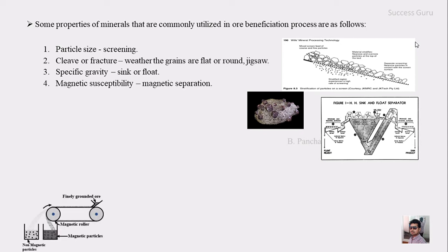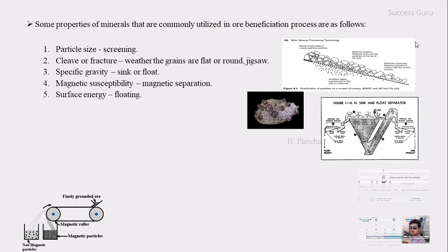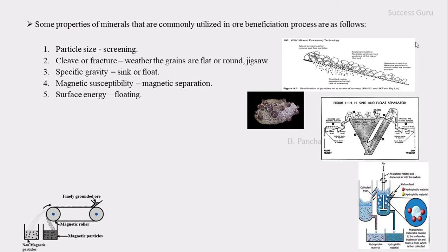The fourth property is magnetic susceptibility — separation with the help of magnetic properties. There is an image below showing a fine powder passed over a conveyor belt with a magnetic head roller. The roller attracts the magnetic material towards the conveyor belt, while the non-magnetic mineral is shifted out and thrown onto the non-magnetic portion. This is how magnetic separation works.